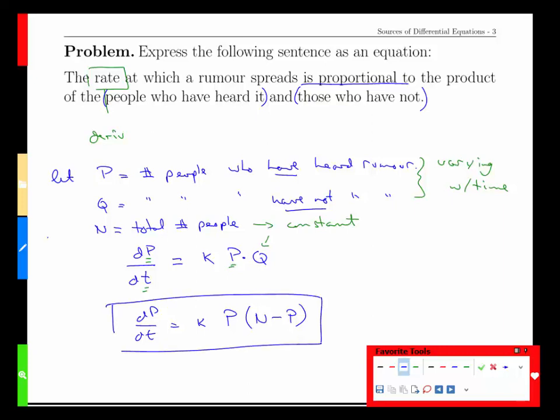If you haven't heard the rumor, then you're in Q and the number of people there is the total population minus the ones who have heard it. And that, again, is a differential equation based on the population P, which is the number of people who have heard the rumor. Once we have this differential equation, our goal would be to find the value of P as a function of time. In other words, how long does it take for the population of people who have heard the rumor to get past 50% or what is the shape? When's the rate of increase highest? Things like that would come from finding that solution.